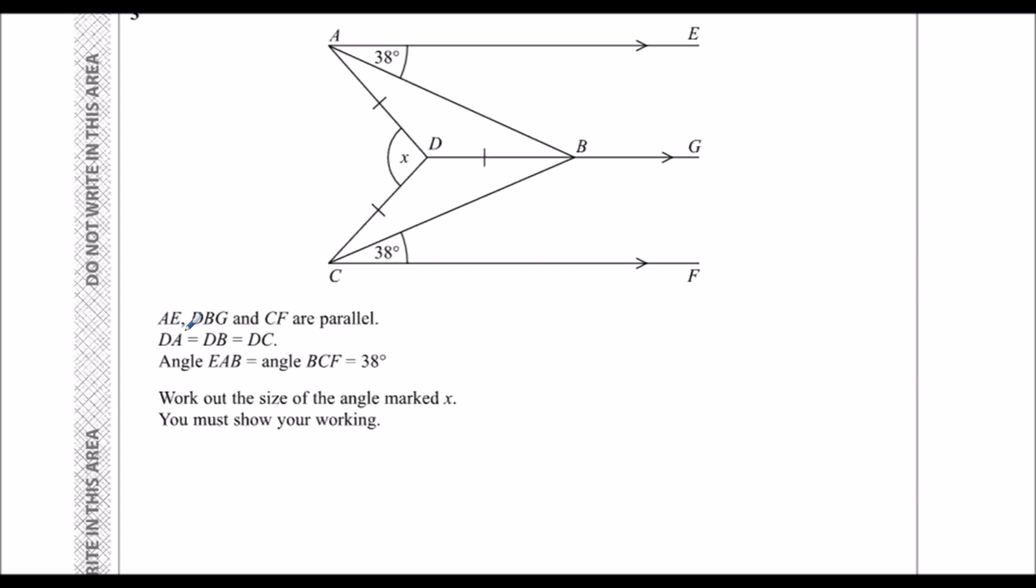So we've got three parallel lines, and they're marked with these arrows here. DA, DB, and DC are equal. They're also marked. That's what these lines mean here. Those three lines are equal, and we've got two 38-degree angles here. We've got to work out what X is.